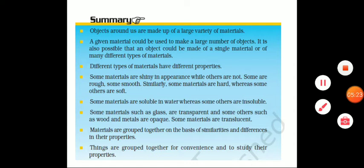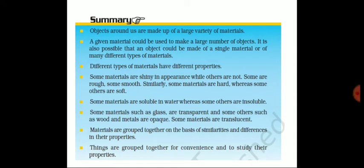So let us see the summary. Objects around us are made up of a large variety of materials — like clay, plastic, metals, glass, and many things. A given material can be used to make a large number of objects. It is also possible that an object could be made of a single material or many different types of material.